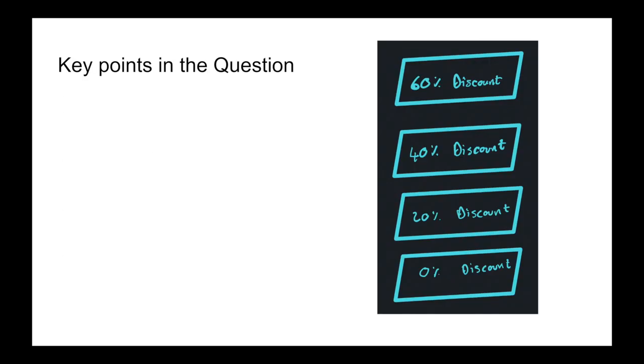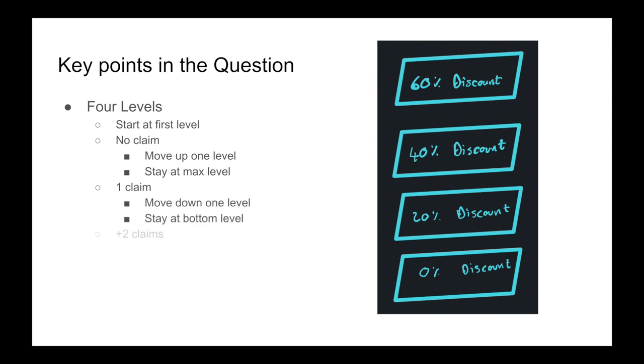So what I like to do is draw out my states. I should get a little exam pad, you know, draw out my various states and let's see what are the key points in this question. So the idea here is that we have four levels, 0%, 20%, 40%, 60%. We then are told that we're starting at the first level. And if there are no claims, we move up one level, or we stay at that maximum level of 60%. If there's one claim, we move down one level, or we stay at the bottom level. If there's two or more claims, we move straight to the bottom level, or we stay at the bottom level.